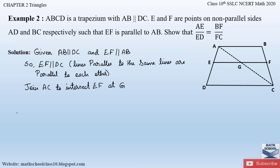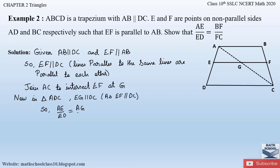In triangle ADC, we can see that EG is parallel to DC, since EF is parallel to DC. So we can apply the Basic Proportionality Theorem: if a line intersects two sides of a triangle and is parallel to the third side, we can apply BPT. Therefore, AE by ED is equal to AG by GC — by Theorem 2.1.